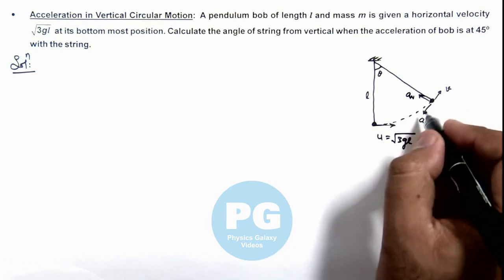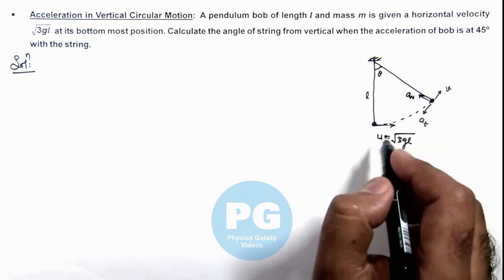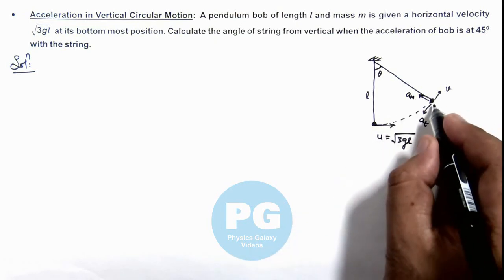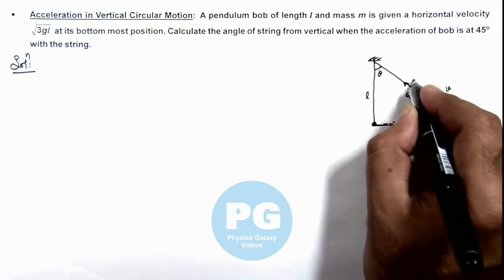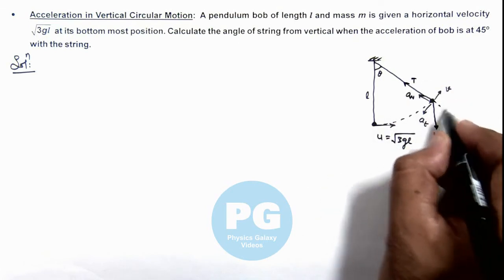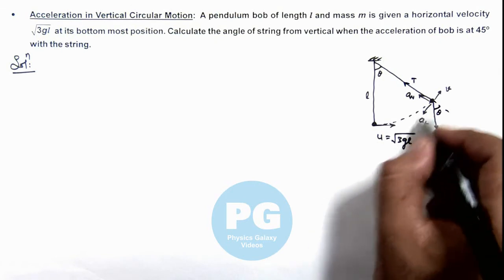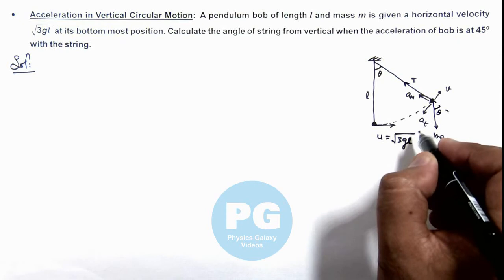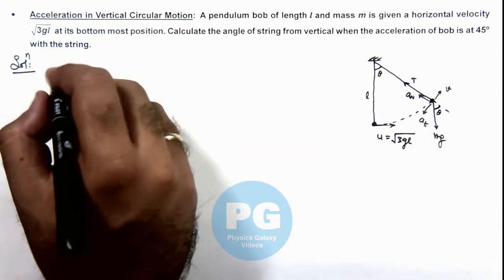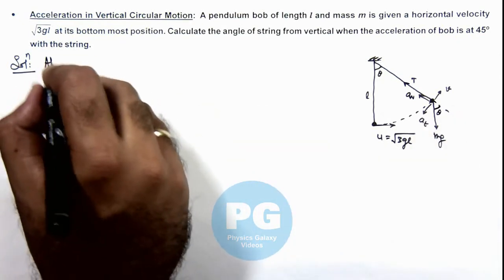Now in this situation we can calculate both of these values. At this point it is only experiencing mg in downward direction and tension in this direction. If this angle is θ, mg sin θ is the force responsible for tangential acceleration. Here we can write at angle θ.